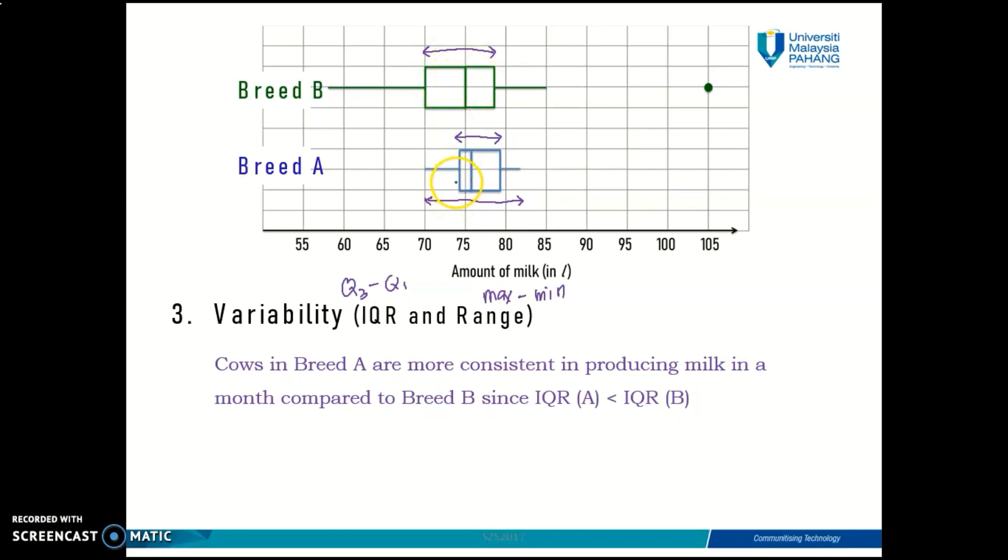Or you can also choose to compare the variability by using range. But of course, in terms of efficiency, IQR is much better to use to compare about variability compared to range. You can easily see the value of your IQR by just looking at the boxplot, just looking at the size of the box.